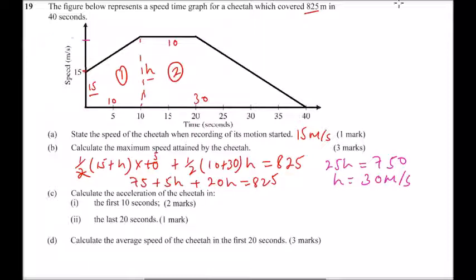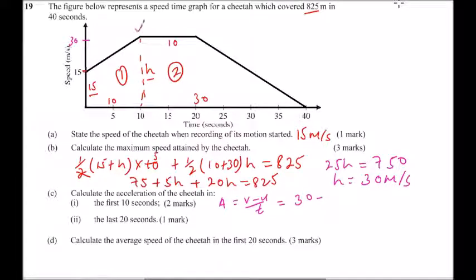Part C: calculate the acceleration of the cheetah. Part C(i): in the first 10 seconds. Acceleration equals (v minus u) divided by t. Final velocity v is 30, initial velocity u is 15 — that is for the first 10 seconds — so we have (30 minus 15) divided by 10, which gives 1.5 meters per second squared.